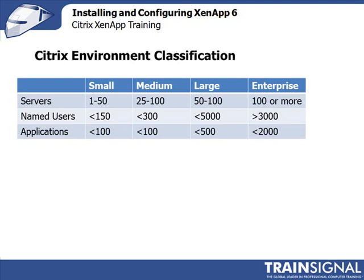You should measure your environment against Citrix's classification — whether they're looking at it as small, medium, large, or enterprise — because the classification makes a lot of difference. They classify based on number of servers, named users, and applications, so you can determine exactly where your environment fits from a server classification perspective.